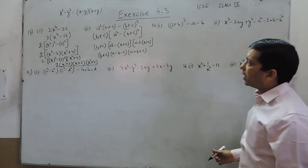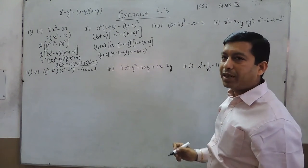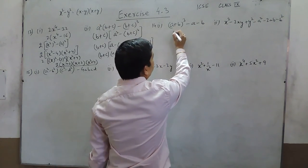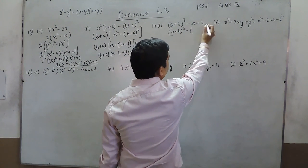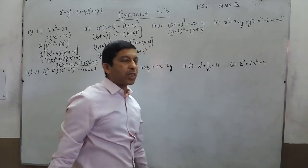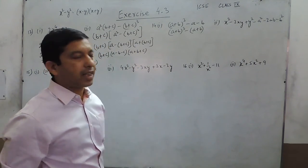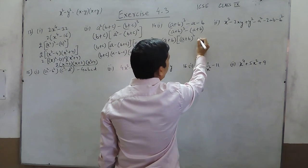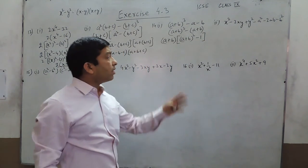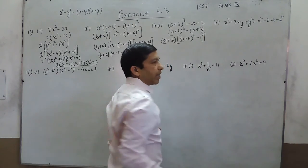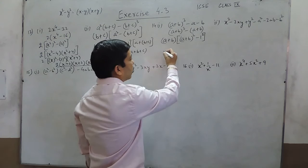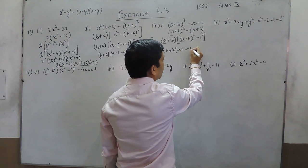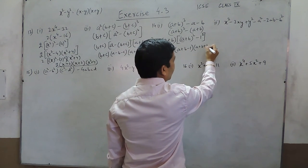In question number 14 part 1, it is a plus b whole square minus a minus b. First we have to understand if we can take something common. We can put it as a plus b whole square minus a plus b, taking negative sign common. Then taking a plus b common, the remaining value becomes a plus b whole square minus 1. Minus 1 or 1 can be written as 1 square. So again the identity x square minus y square gives us a plus b minus 1 as one factor and a plus b plus 1 as the other factor.